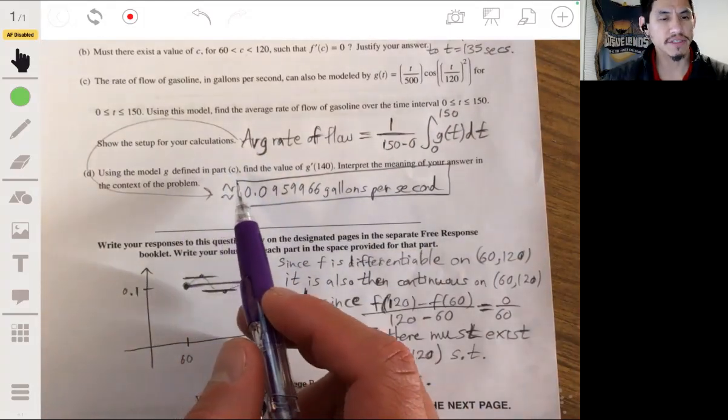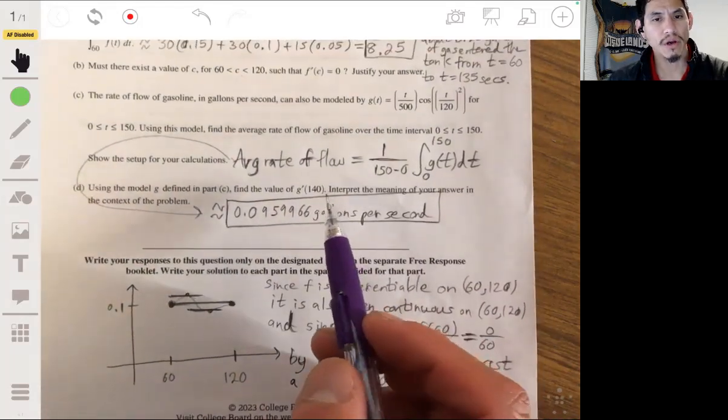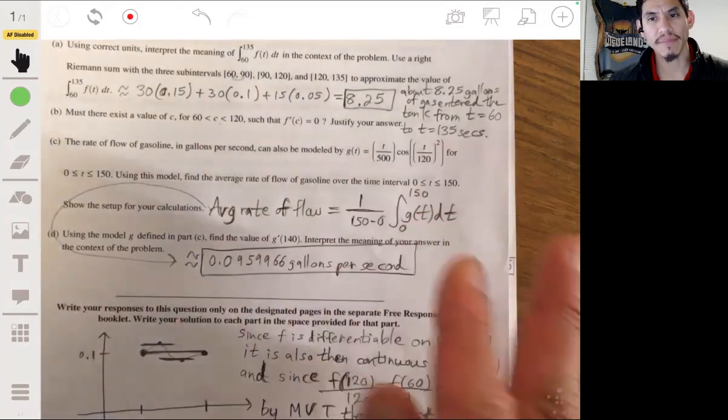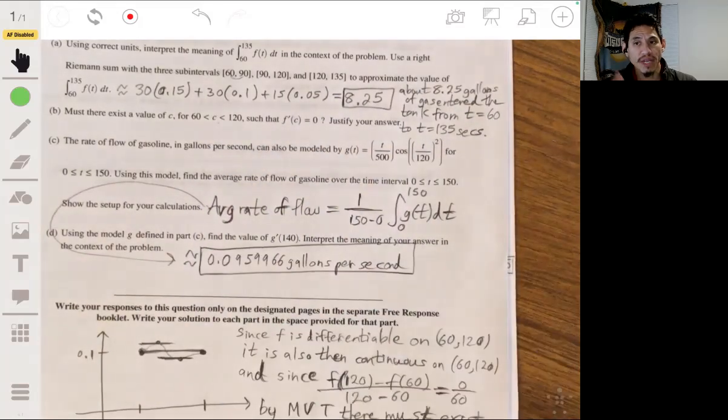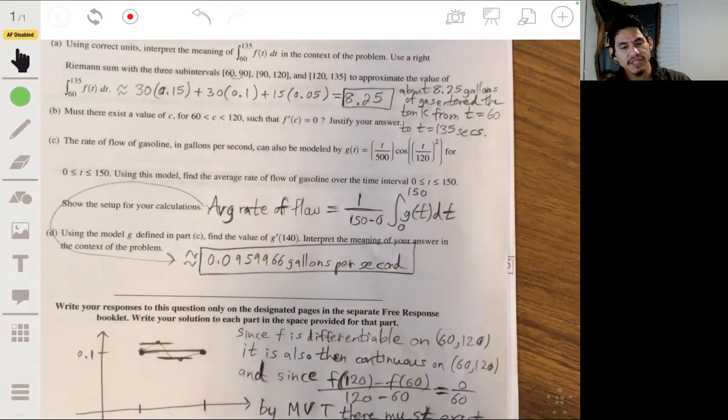Alright, for D, using the model defined in part C, find the value of G'(140) and interpret the meaning of your answer in the context of the problem. So you're finding the derivative of this function. Now, let's just talk about what that means in general. Since this function right here is already talking about the rate of flow of gasoline, you're essentially finding the rate of the rate. It kind of sounds weird, but it's kind of like when you're driving a car, you have velocity, that's your rate of change.